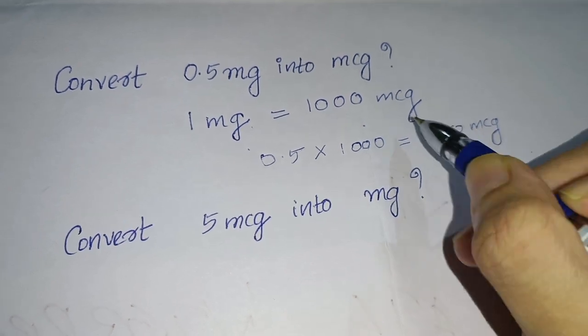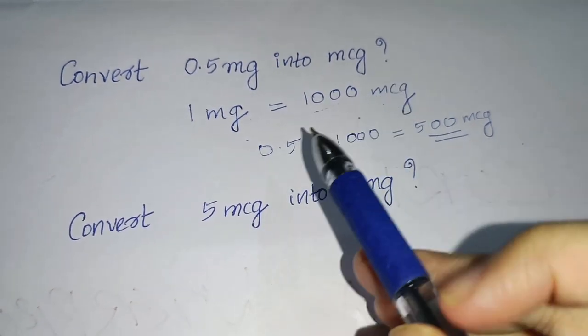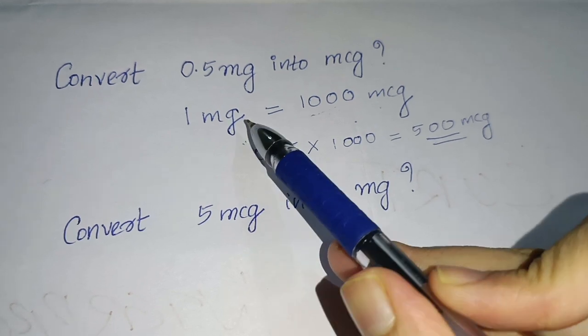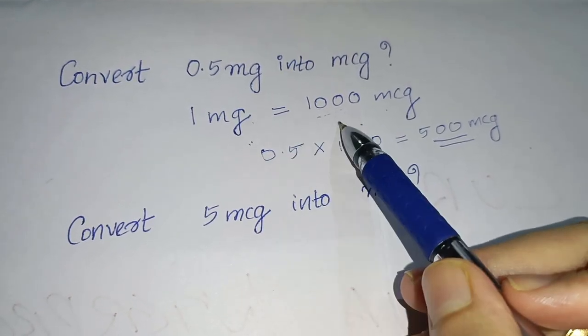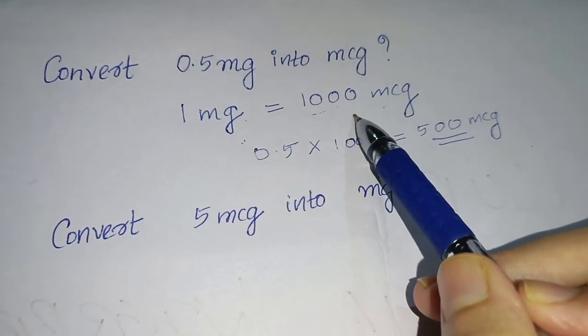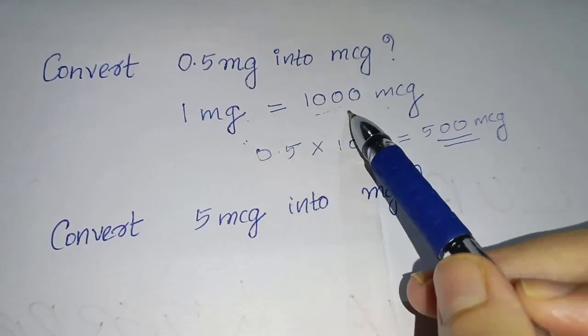It's very simple to do. Direct question. So always if you have confusion, you write the first equation: 1 mg is equal to 1000 microgram. Standard conversion.